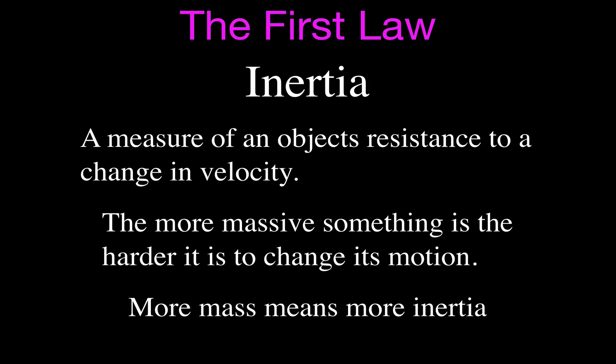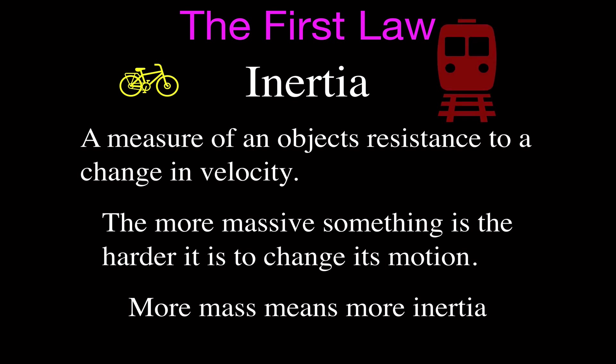There's a direct relationship between mass and inertia. Mass we can quantify — you can say something has a mass of so many kilograms or grams — but you cannot really quantify inertia. We say that more mass means more inertia. For example, if we have a bicycle that has some mass, and a train that has more mass, which has more inertia? Obviously the train has more mass, so it has more inertia than the bicycle. The bicycle has less mass and therefore less inertia.